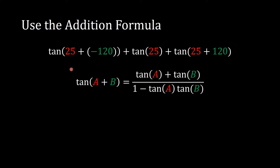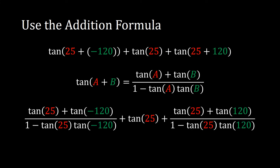Now we bring in the tangent addition formula. We have tangent of 25 minus 120, plus tangent of 25, plus tangent of 25 plus 120. Plugging into the formula: for the first term, A is 25 and B is negative 120; for the last term, A is 25 and B is 120. The middle term, tangent of 25, stays as is since tangent of 0 is 0.